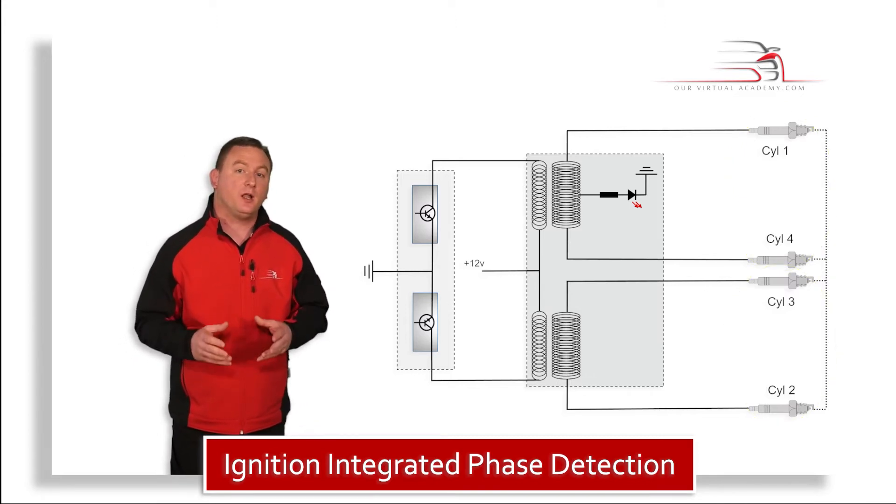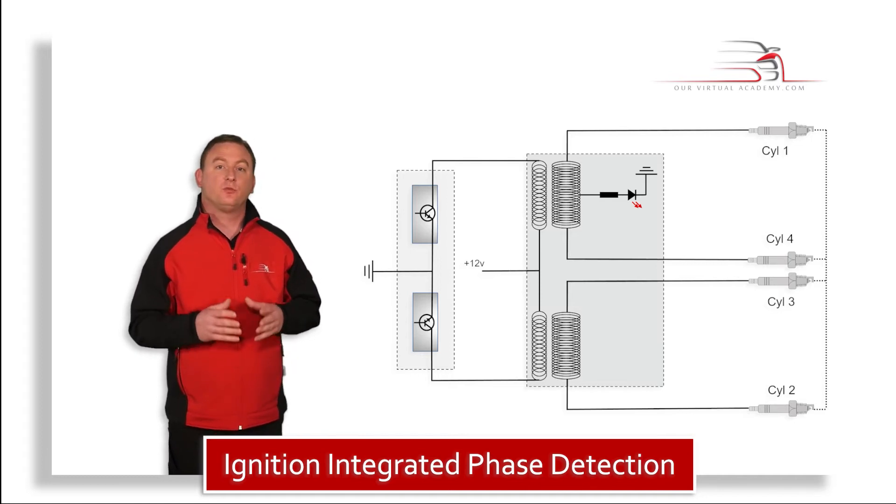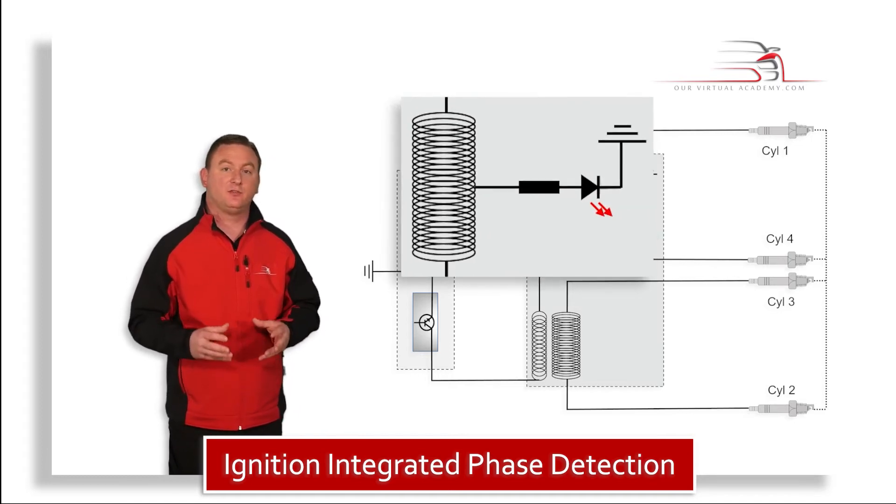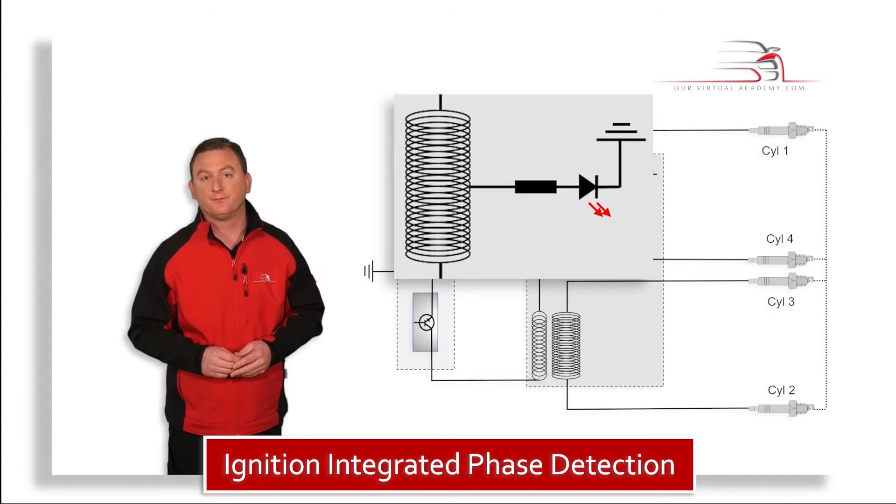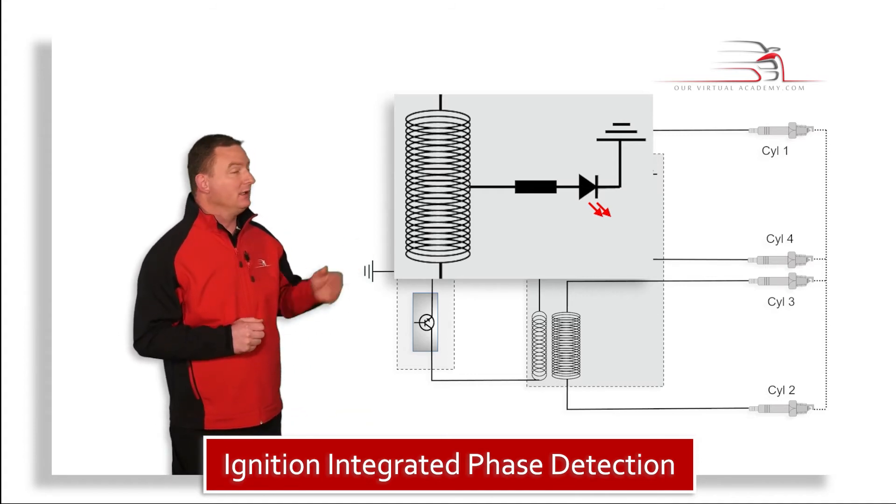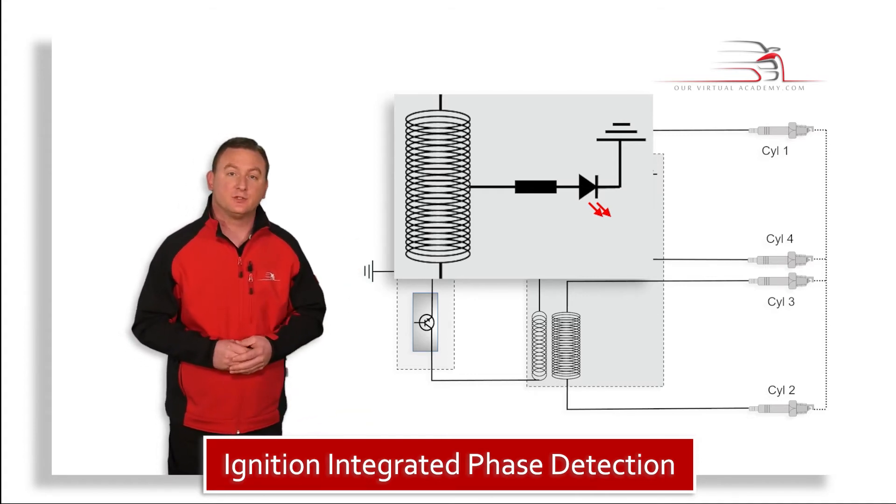The coil that supplies one and four is one that has the phase detection system integrated to it, as indicated by the LED connected to the secondary coil.